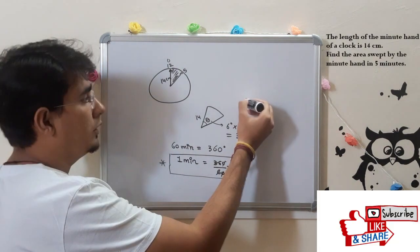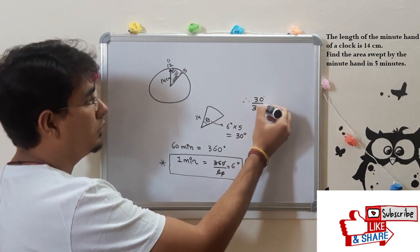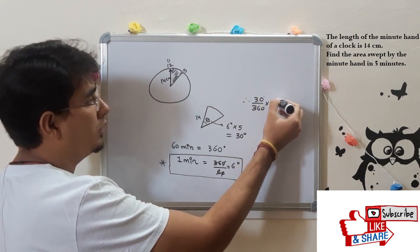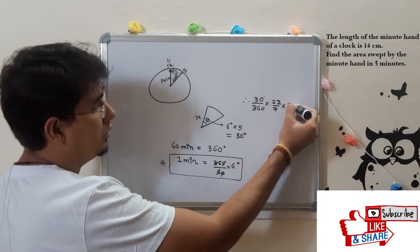The area is 30 over 360 times 22 by 7 times 14 squared.